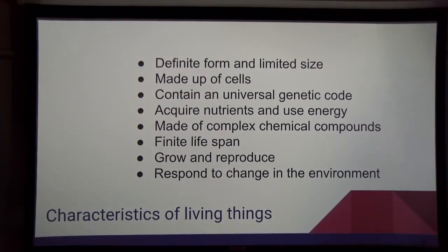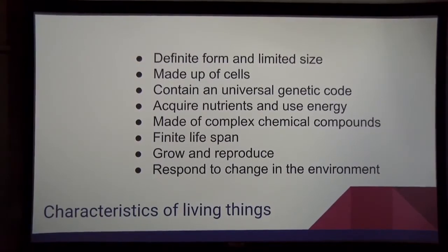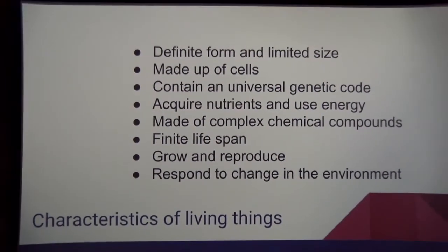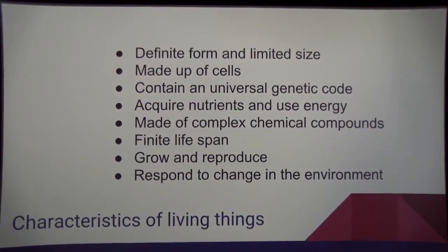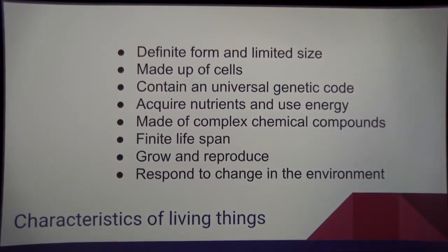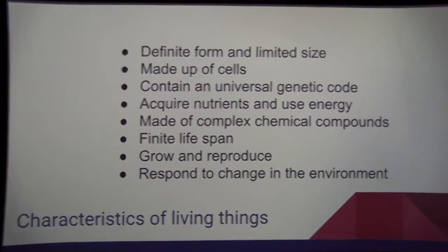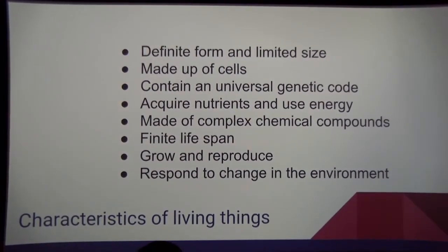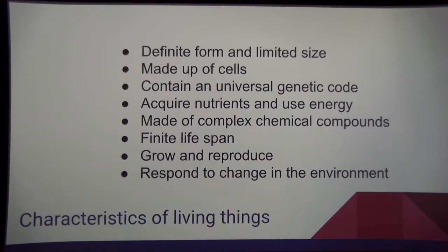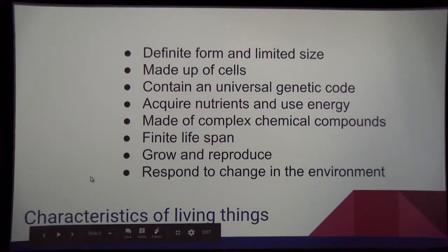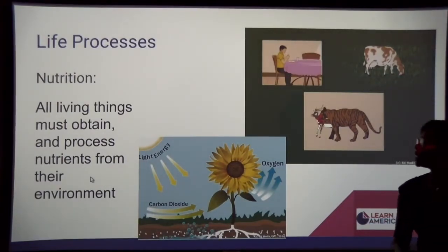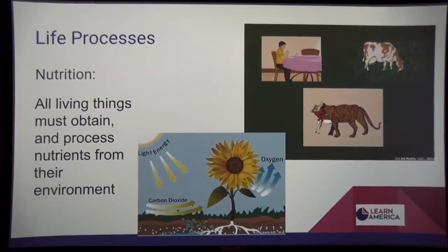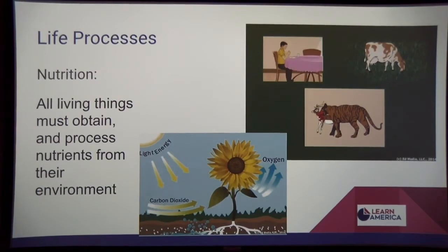You must have a definite shape, you must be made up of cells, you have to have a universal genetic code, and be able to acquire nutrients. Living things are complex — we have simple organisms but they're made up of complex compound structures. They must have a finite lifespan, grow and reproduce. Living things must be able to respond to their environment. All of these characteristics are carried out by different life processes. Living things must be able to carry out nutrition — obtaining nutrients from the environment.